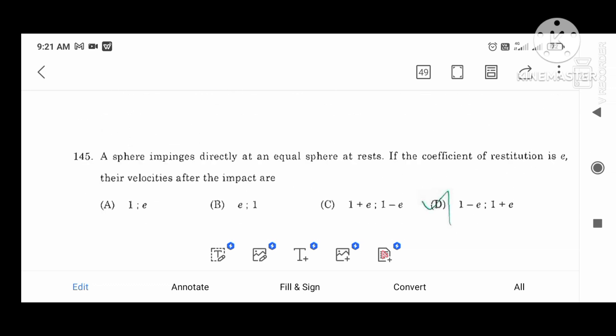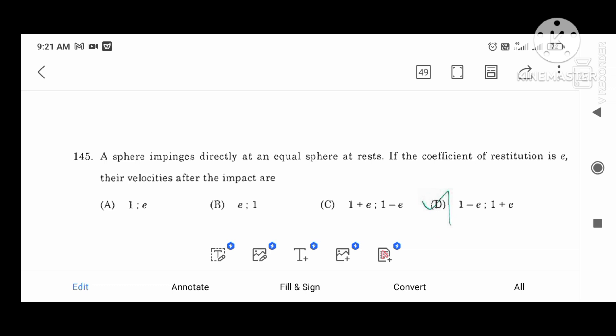This is the sphere. Directly equals the sphere. Rest. The coefficient of the value. This is the result. 1 minus E. 1 plus E.